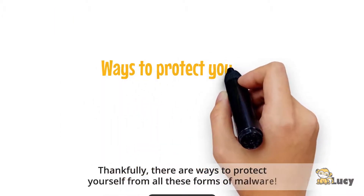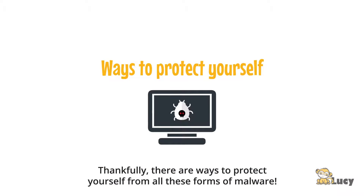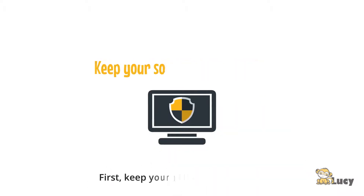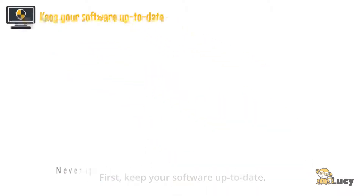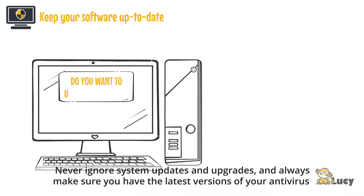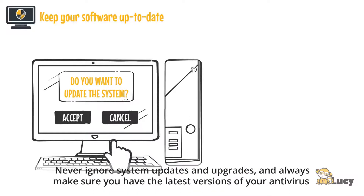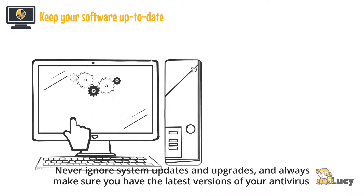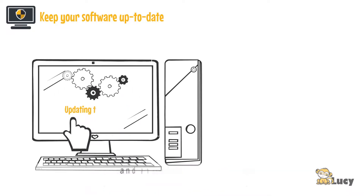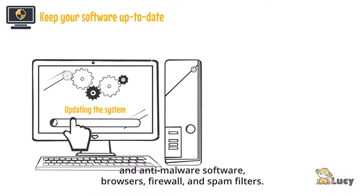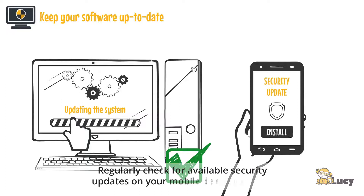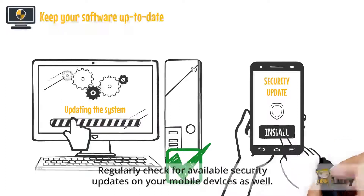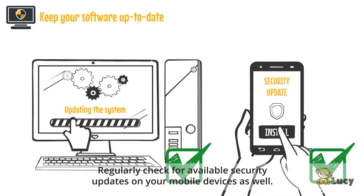Thankfully, there are ways to protect yourself from all these forms of malware. First, keep your software up to date. Never ignore system updates and upgrades, and always make sure you have the latest versions of your antivirus and anti-malware software, browsers, firewall, and spam filters. Regularly check for available security updates on your mobile devices as well.